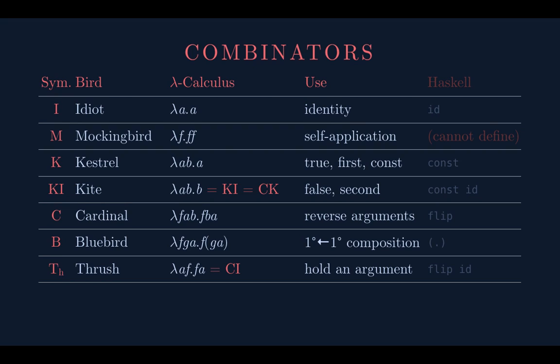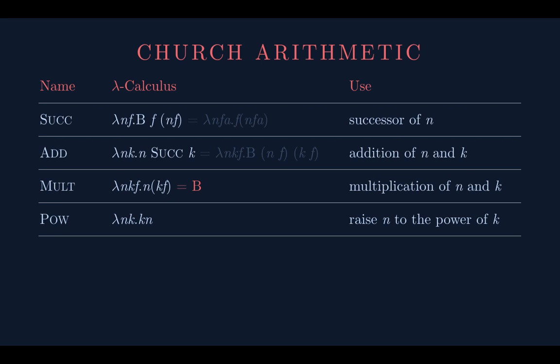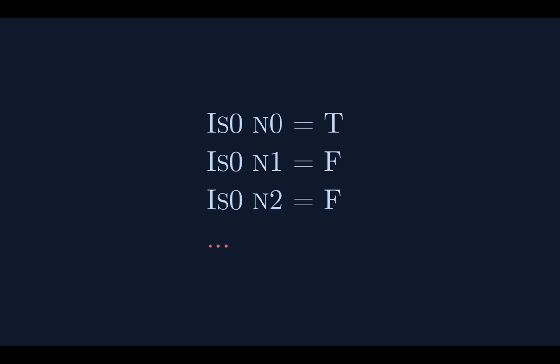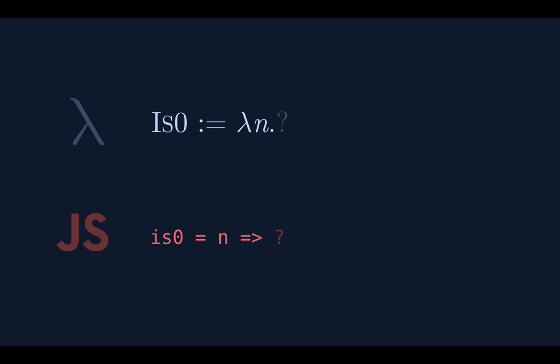We've got arithmetic using the Thrush. Here's a nice one — checking if something is zero. If we give it zero it should return true; one should be false, two false, and so on. It's a function that takes a church numeral. If n is zero, it doesn't apply the function at all — it just returns the second argument. So that second argument should be true. What do church numerals do? They take a function and an argument and apply the function a certain number of times.